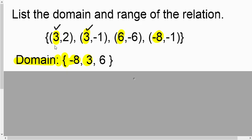You don't put 3, 3 even though it happened twice. We only have to list it once. And then our largest x value was a 6, close bracket, and we're done.